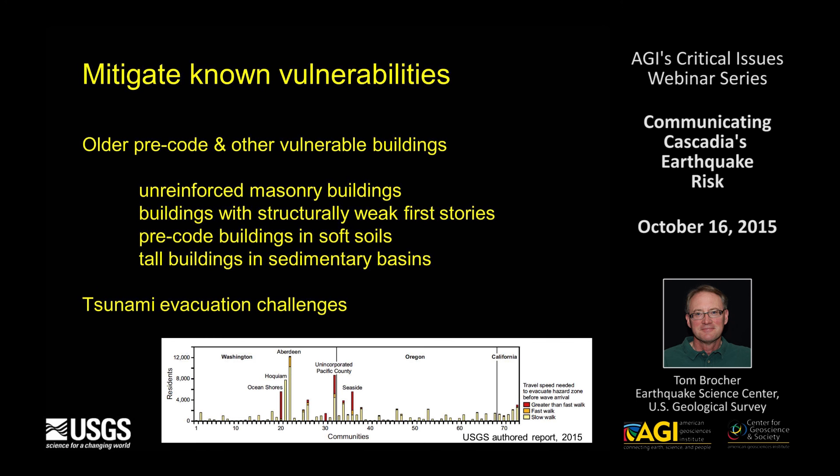We know we have vulnerabilities along the subduction zone. Although we have good building codes in place now, many buildings were built before these codes and remain vulnerable. The most vulnerable are unreinforced masonry buildings, buildings with structurally weak first stories, older buildings on soft soils, and some taller buildings in sedimentary basins that will shake at the frequencies those basins amplify. Both San Francisco and Los Angeles have passed ordinances mandating the retrofit of the most vulnerable buildings to improve resilience.